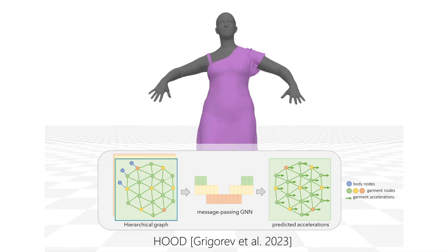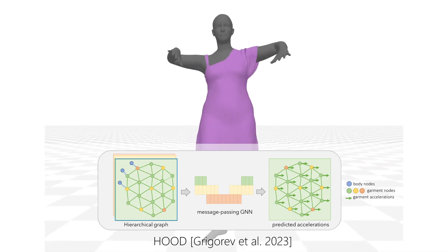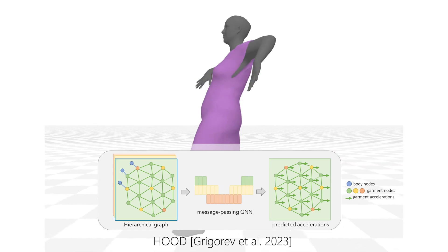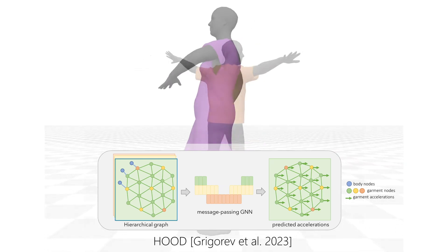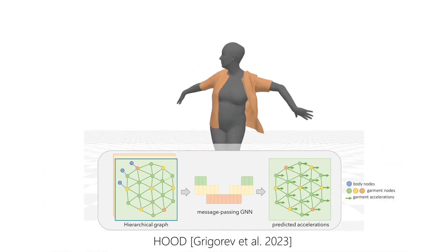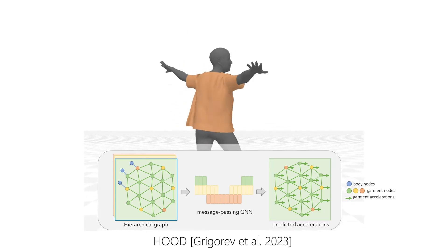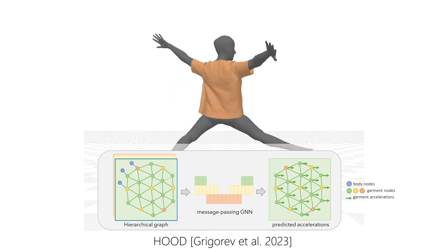ContourGraft uses a graph neural network, similar to HOOD, to iteratively predict nodal accelerations of garments, and expands it in several ways.